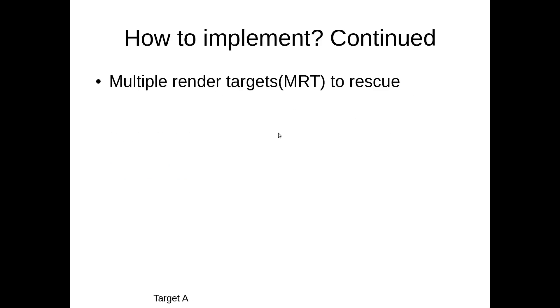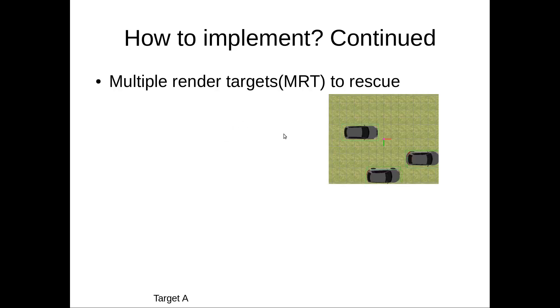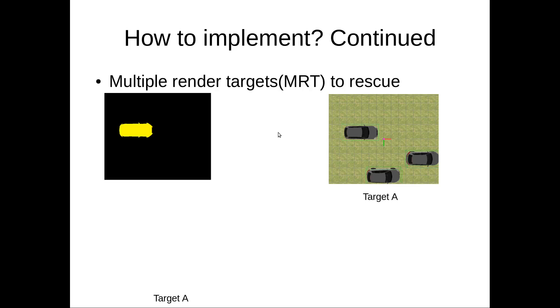To render the object borders, we need multiple render targets. So here, this is the main render target. We render all the objects. And similarly, we render the selected object with stencil buffer enabled. And this is the render target A.